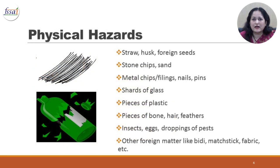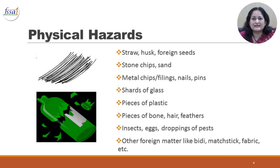Physical hazards include straw, husk, foreign seeds, stone chips, sand, metal chips, filings, nails, pins, shards of glass, and pieces of plastic that may fall off from processing equipment, also from packaging or due to improper handling. Additional physical hazards include pieces of bone, hair, feathers, insects, eggs, droppings of pests, and other foreign matter like beads, matchsticks, fabric, etc.